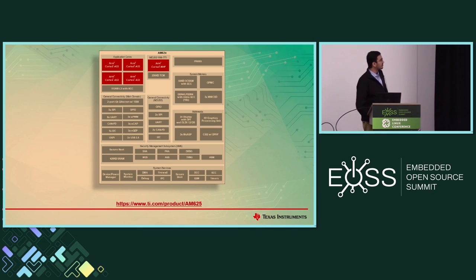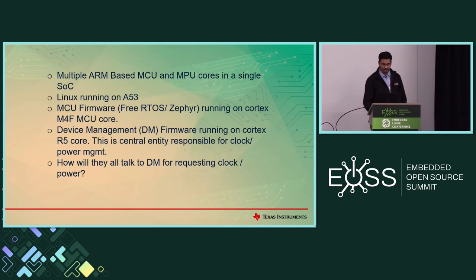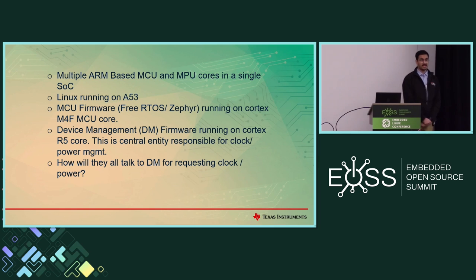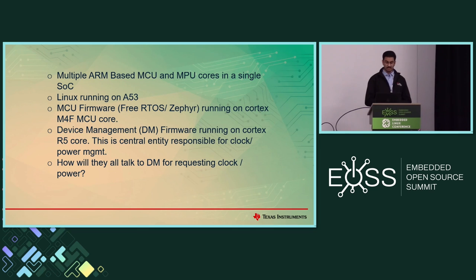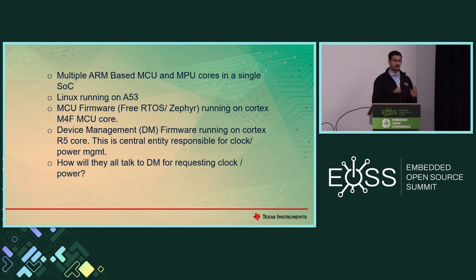This is just an example of a complex SOC — it's based on the K3 architecture, the AM62. On the top left you can see the Cortex-A53 cluster which runs Linux. Then we have the MCU-M4 core and various other peripherals inside this SOC. The question is how are you going to manage all of it? You have multiple ARM-based MCU and MPU cores. We have something like Linux running on the Cortex-A cores, an MCU firmware on the MCU core, and a device management firmware running on another Cortex-R5 core — the central entity responsible for clock and power management.